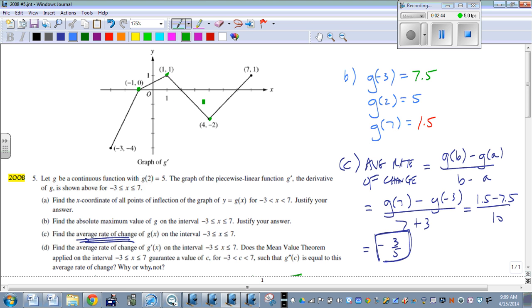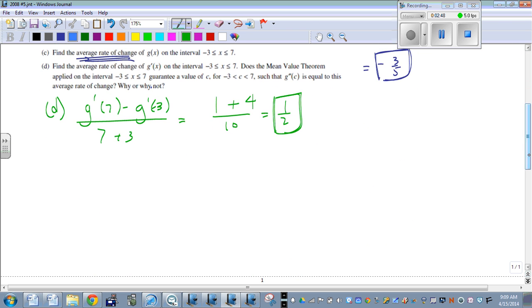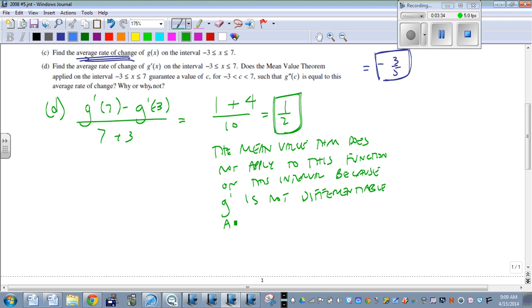So it's not differentiable at those three points. In order for the mean value theorem to work, our function has to be differentiable. So it's asking, will it work, and then why or why not? The mean value theorem does not apply to this function on this interval, because derivative of G is not differentiable at all points on this interval.